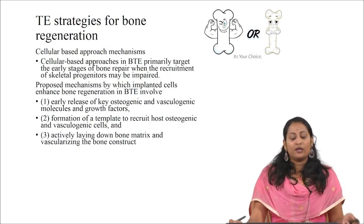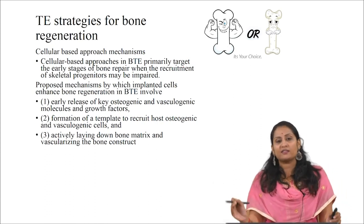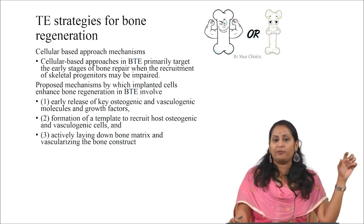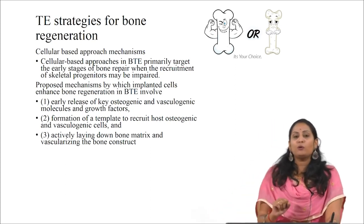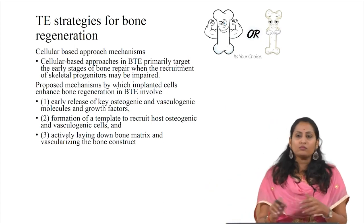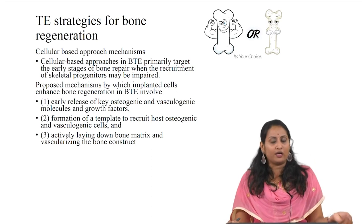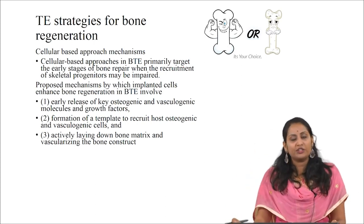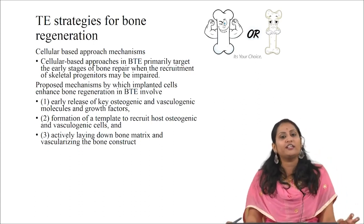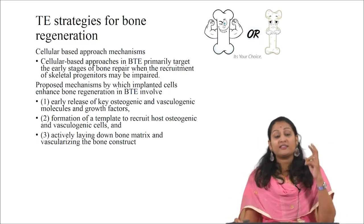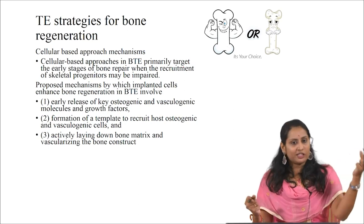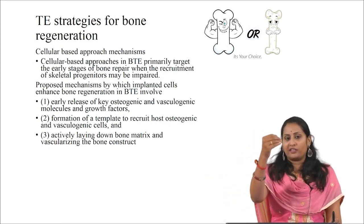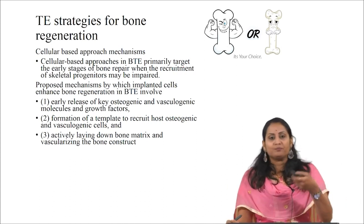These approaches are mainly based on a preventive mechanism, primarily targeting the early stages of bone repair when the skeletal progenitors become impaired — mainly due to trauma, disease conditions, or aging. The proposed mechanisms by which implanted cells enhance bone regeneration involve: first, early release of key osteogenic and vasculogenic molecules and growth factors; second, forming a template to recruit osteogenic and vasculogenic cells; and third, actively laying down the bone matrix and vascularizing the bone construct.